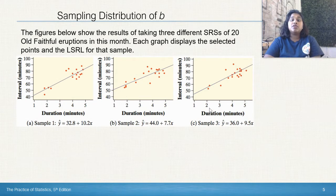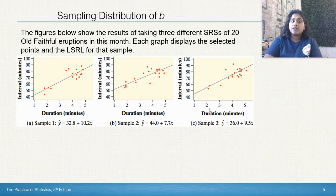The figure below shows the results of taking three different SRSs of 20 old faithful eruptions in that month. Each graph displays the selected points and the least squares regression line for that sample. What do you notice about these three samples? What do you notice about the slopes of these three samples?